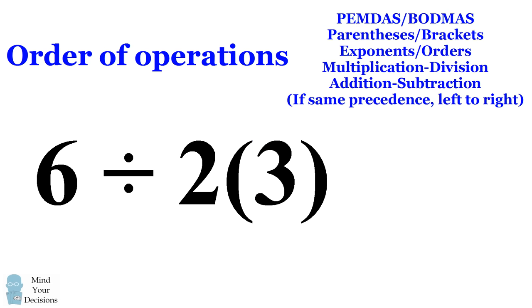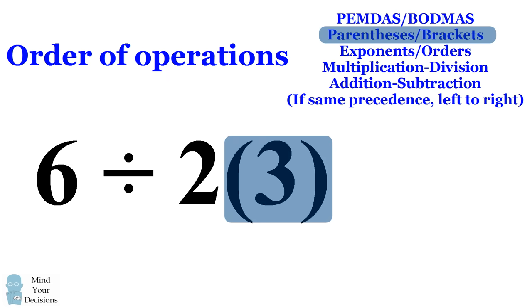Now the question is what to do next. If you input this into Google, Wolfram Alpha, or pretty much any scientific calculator, all of these will interpret the parentheses as an implicit multiplication. So this 2 parentheses 3 will be converted into 2 times 3.